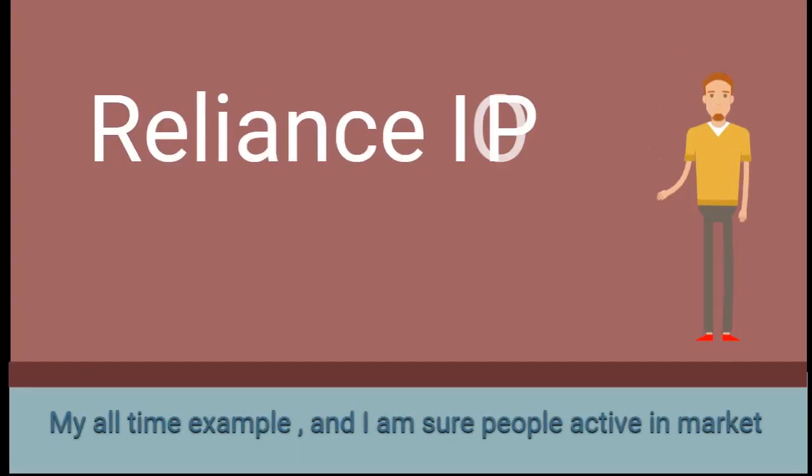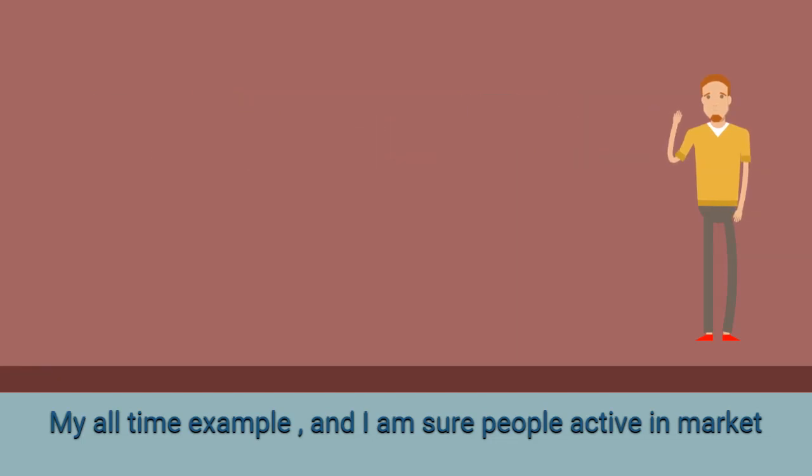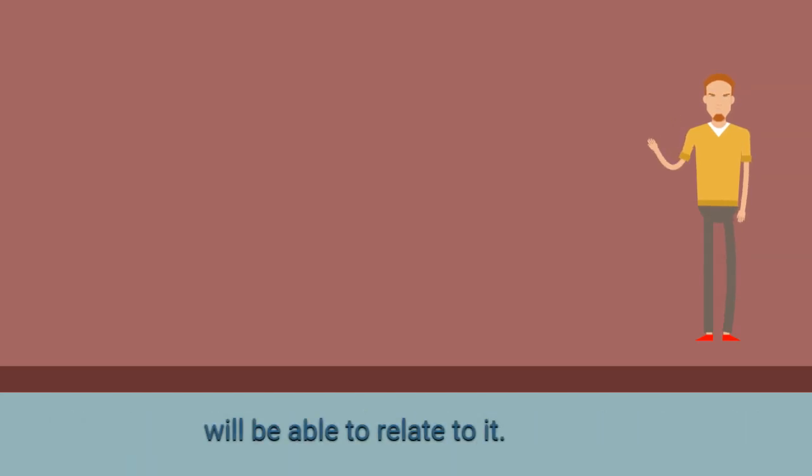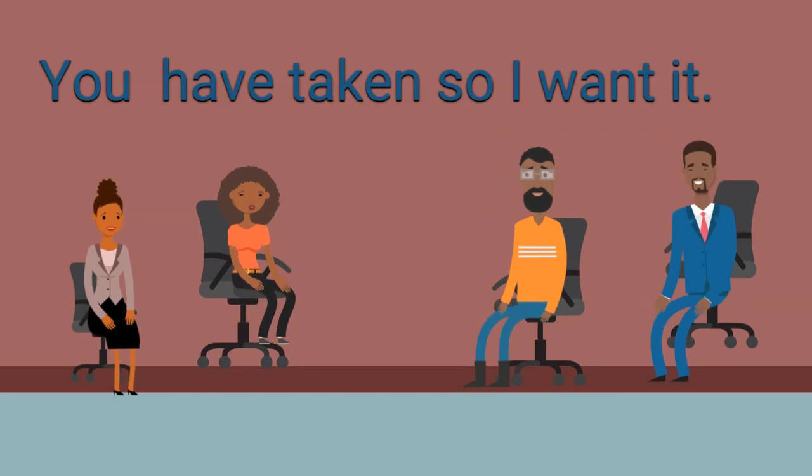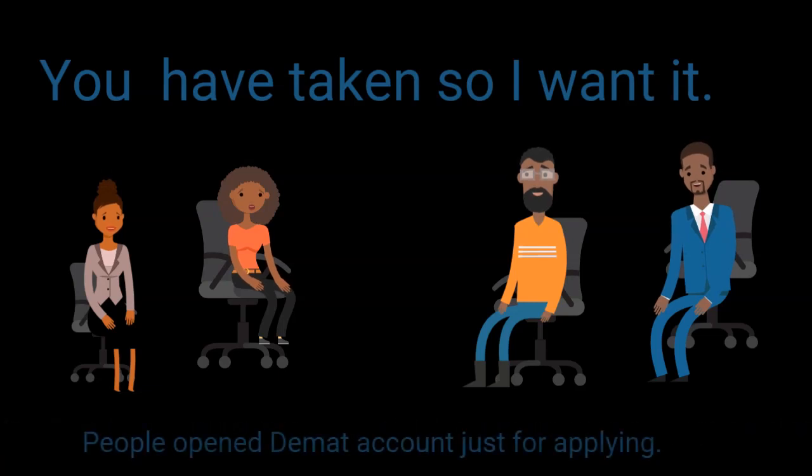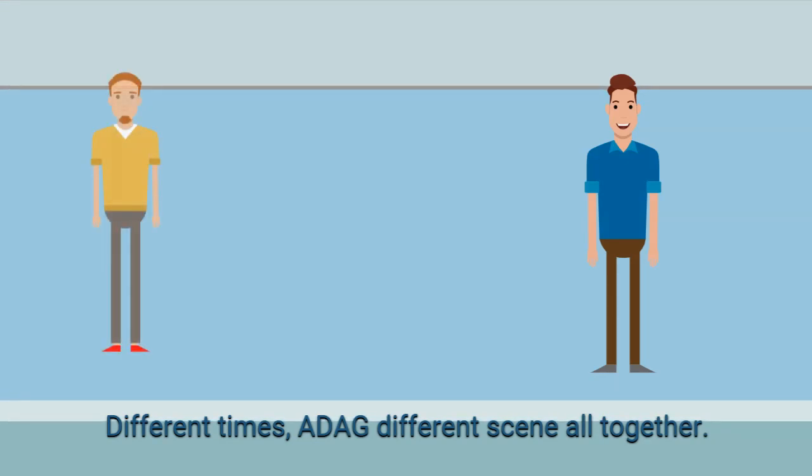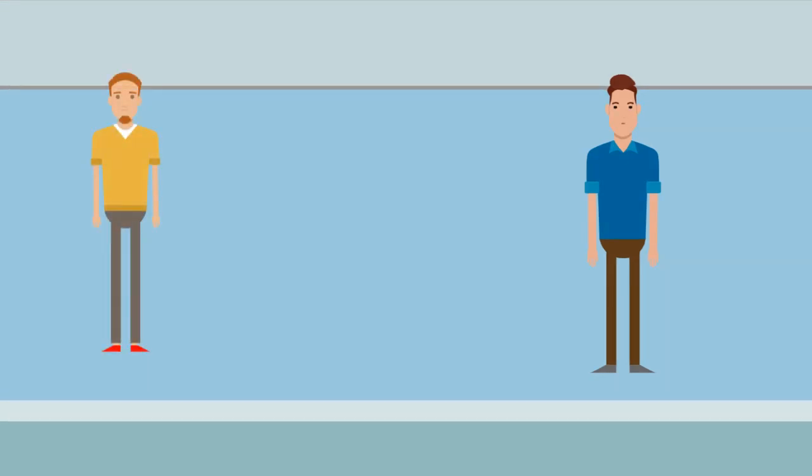Could you give me a real-life example, please? Yeah, this is my all-time favorite example. I'm sure people who were active in the market during 2007 would relate to it. Reliance Power was offering an IPO, and I think it's the best example of herd mentality. The ADAG group announced this IPO and everyone wanted to subscribe to it. I remember people opening DMAT accounts just to apply for this IPO. Different times if you look at ADAG now.